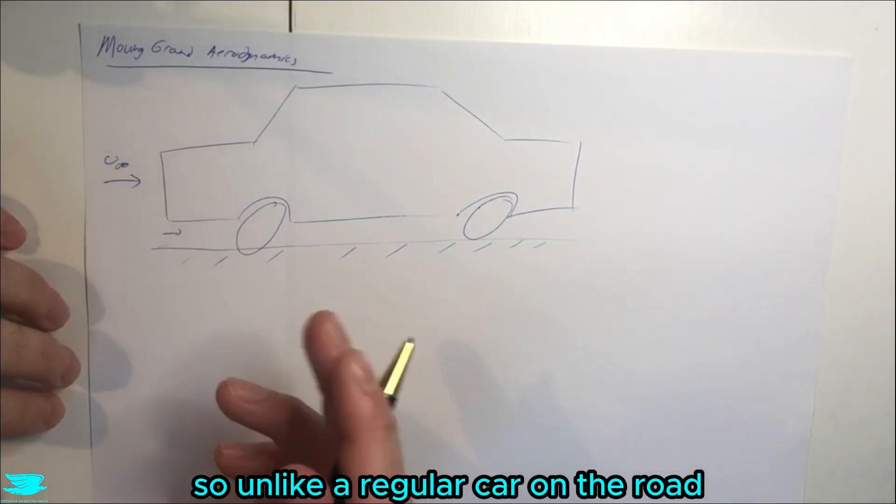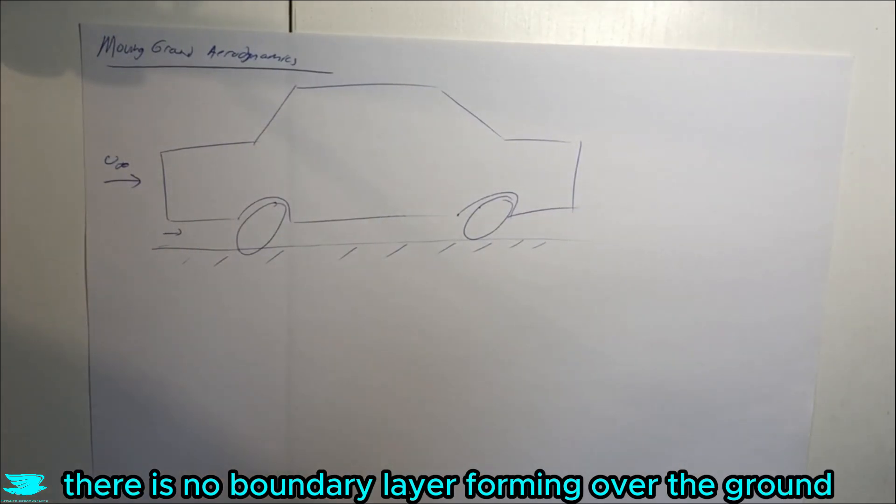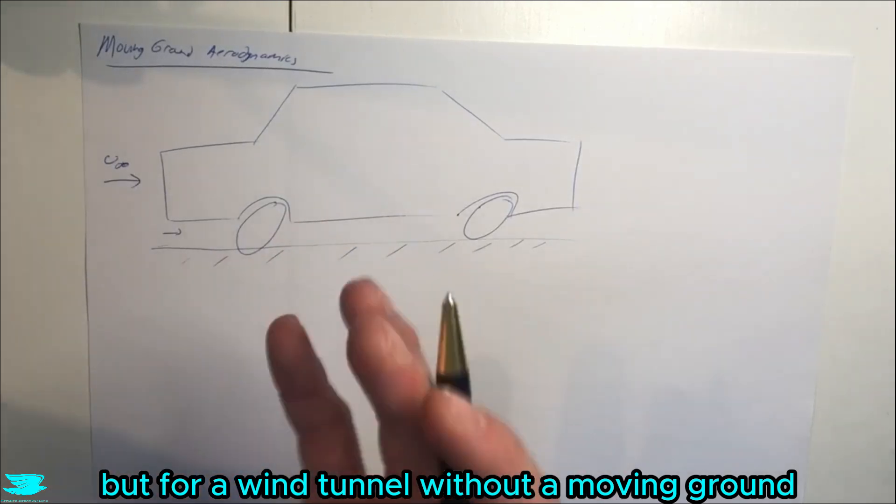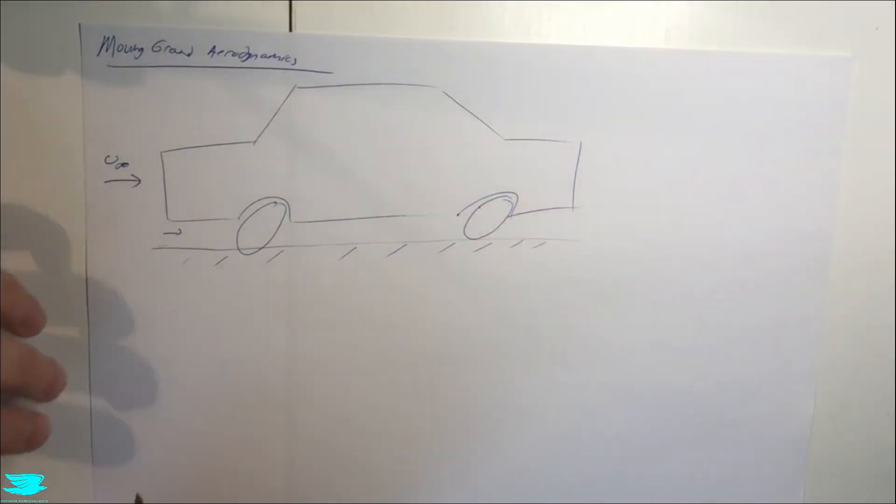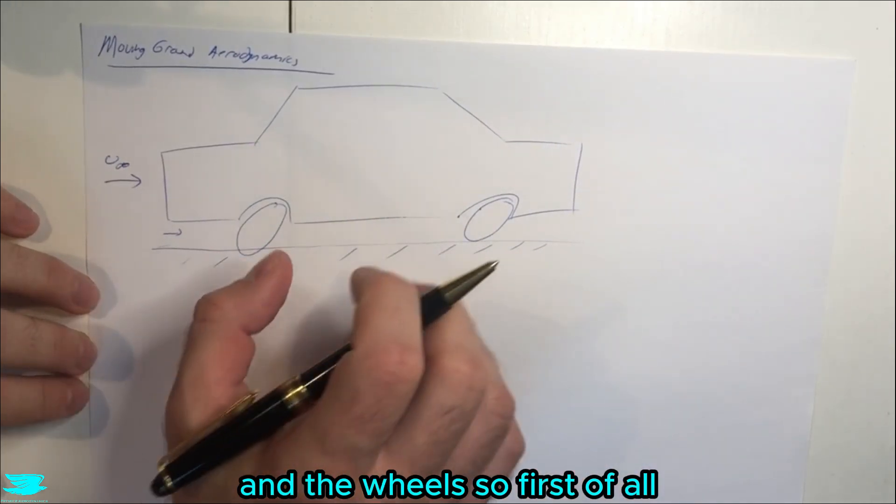Unlike a regular car on the road, there is no boundary layer forming over the ground. But for a wind tunnel without a moving ground, there is a boundary layer forming. This is very important for the underbody section of the car and the wheels.